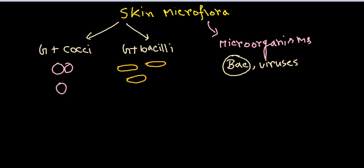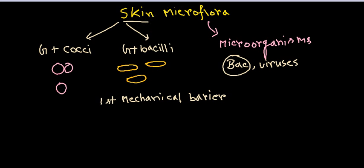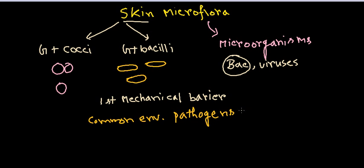The most important thing about skin is that it is the first mechanical barrier to any kind of harmful pathogens like bacteria or viruses. Skin is directly attached to the environment, so any common environmental pathogens — bacteria or viruses — present in the environment have a tendency to attach to the skin and can cause different types of diseases if they become pathogenic.